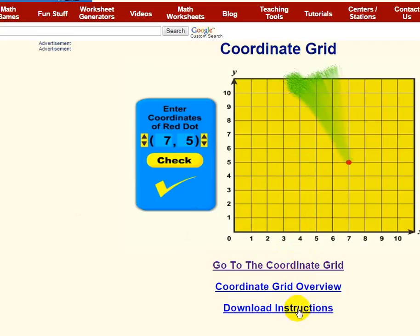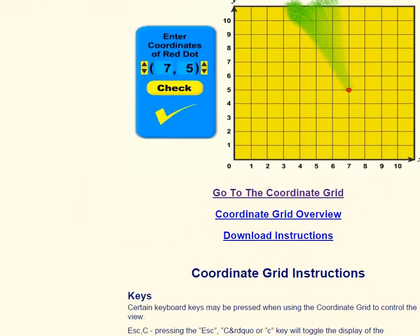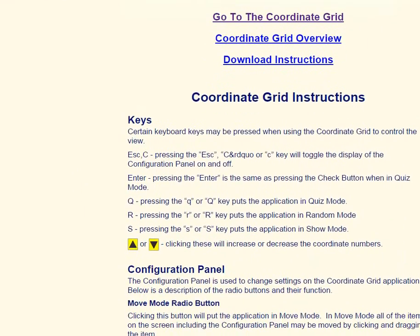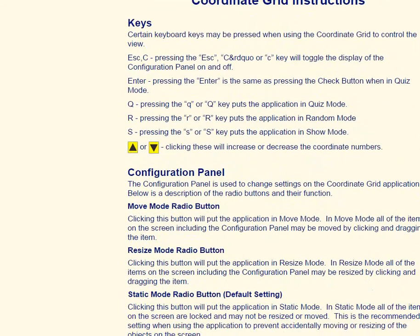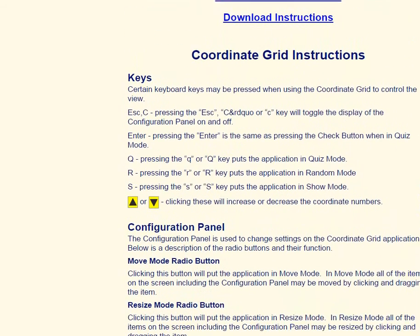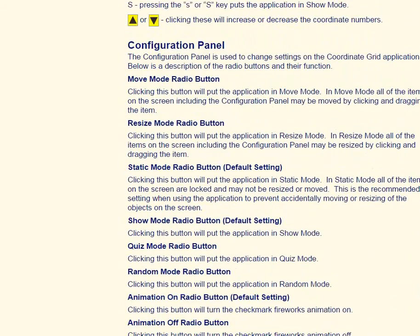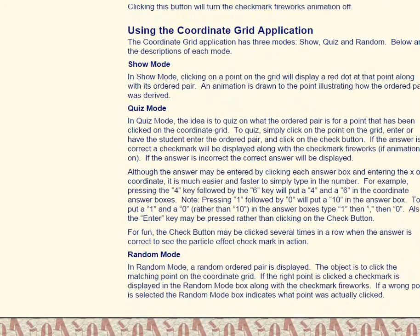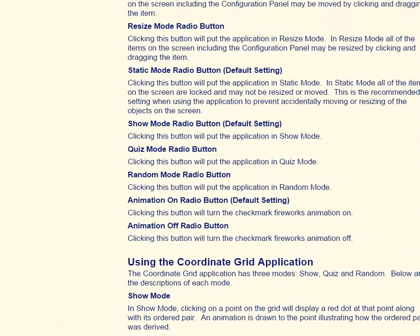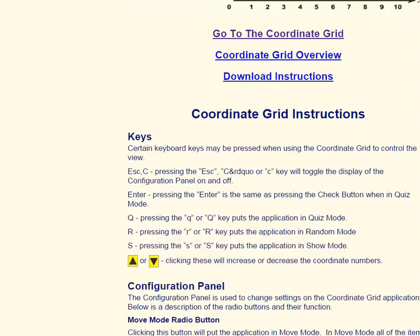You can download the instructions by clicking this or you can go to the Coordinate Grid. If you scroll down on this page, it gives you all the instructions and I'm going to go over that in a minute. If you need a refresher, you can either look in this page or download the instructions and read them offline. It's a lot of instructions, but it's more details than anything because it's fairly simple to use.